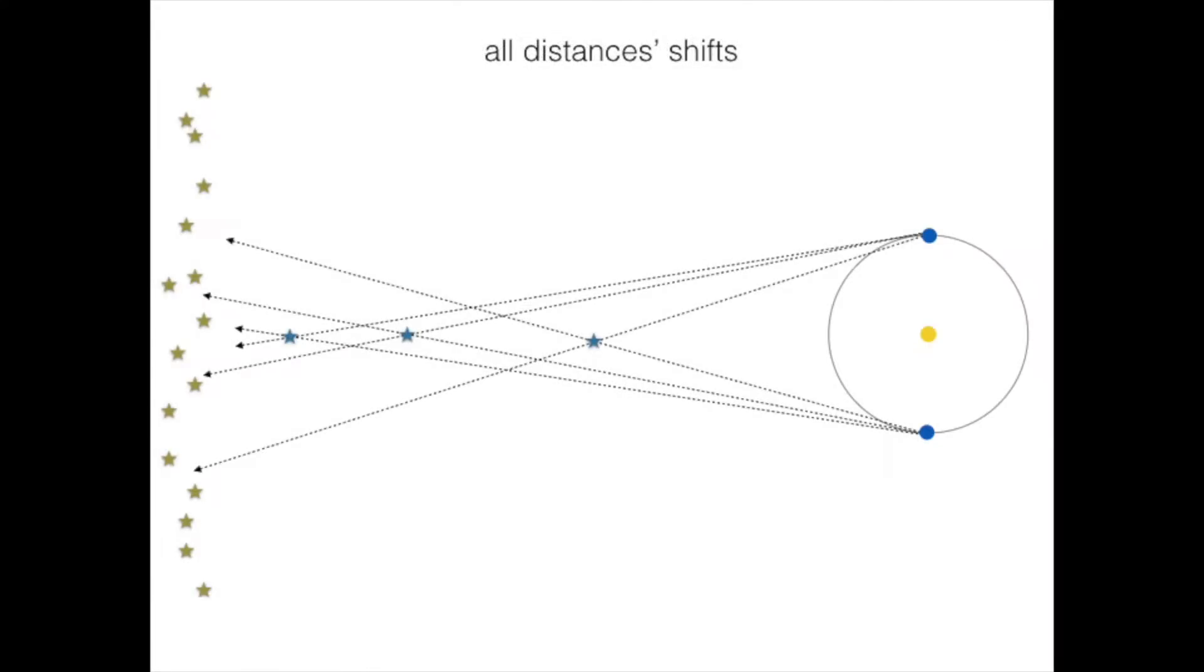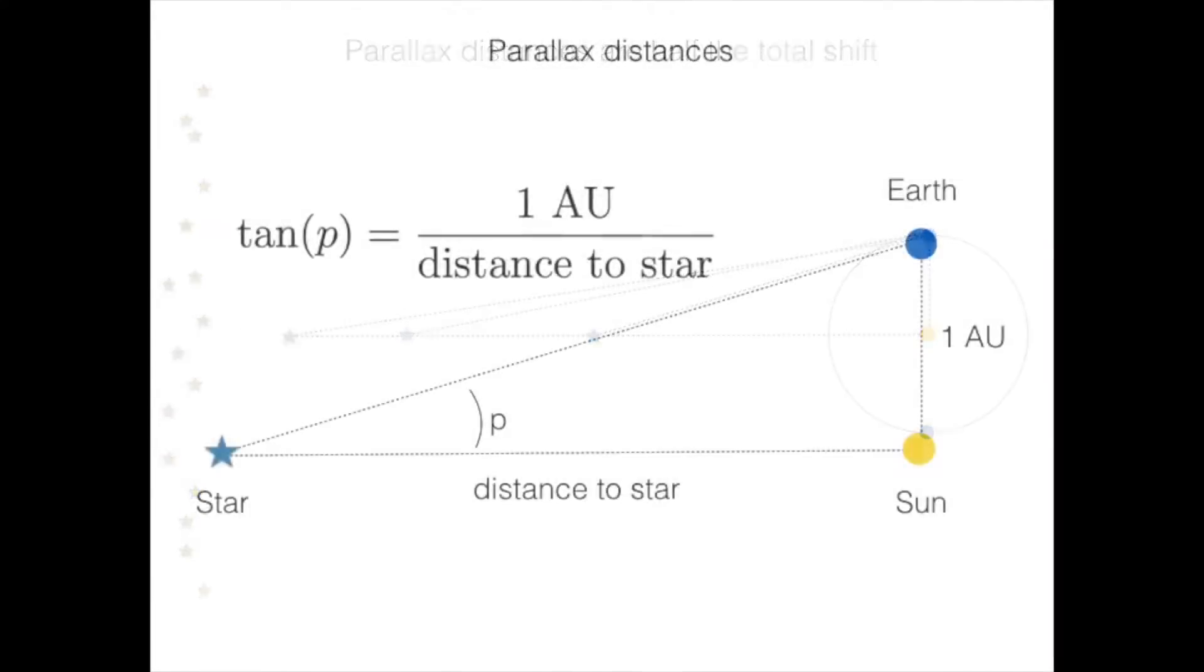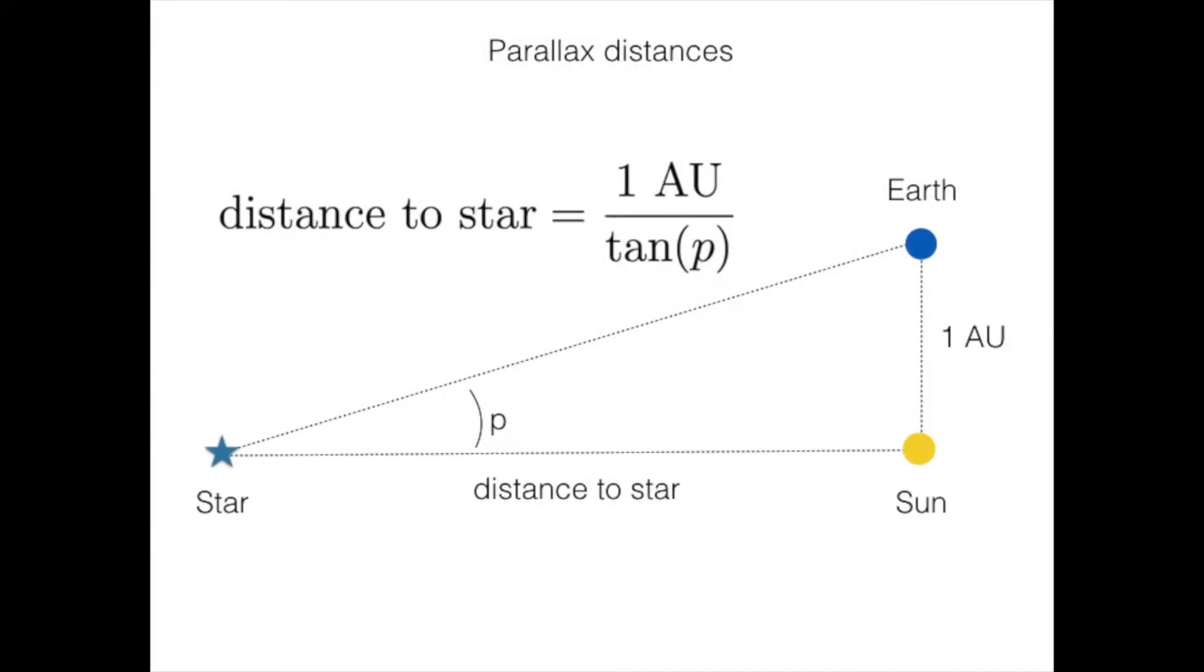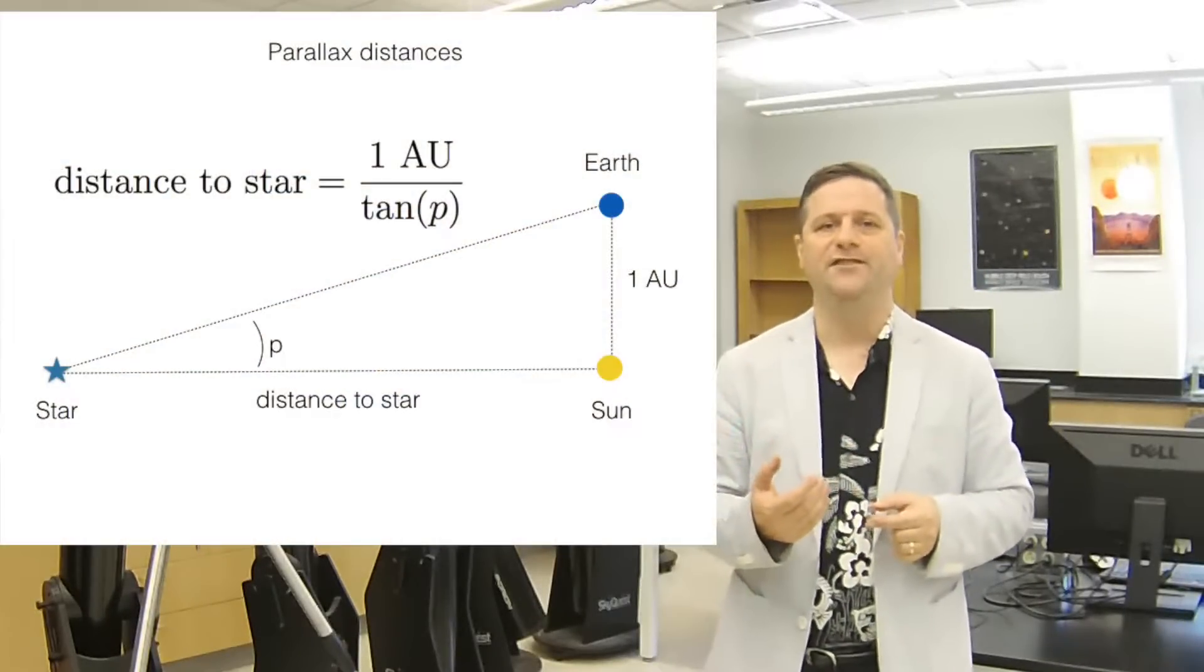The radius of the Earth's orbit is 93 million miles or about 150 million kilometers. So the diameter of Earth's orbit is about 300 million kilometers, which is a really big baseline, but it's just barely enough for us to get the distances to the stars.